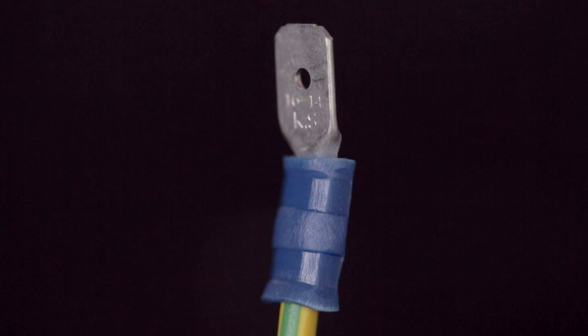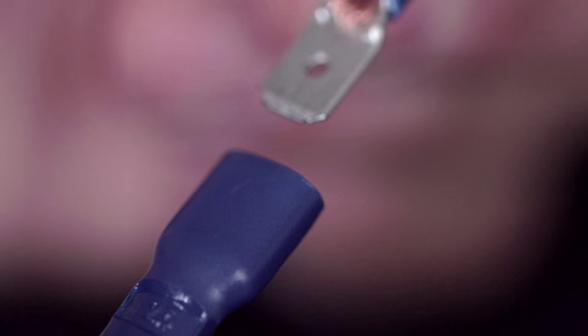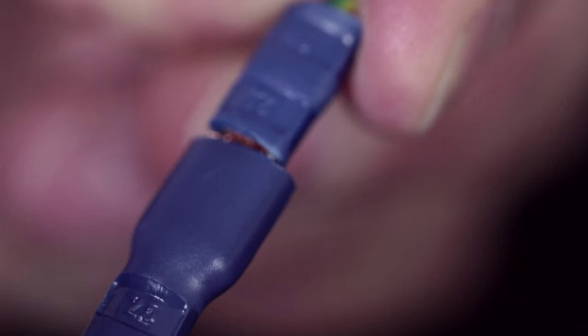This is a spade connector for a fast-on crimp which is colour coded and fixed in the same way. The spade connector pushes into the fast-on crimp to form the connection.